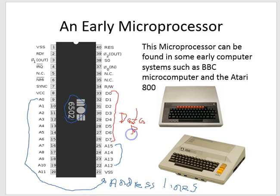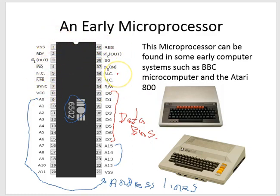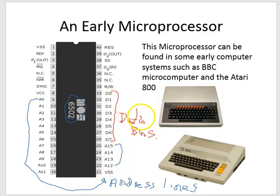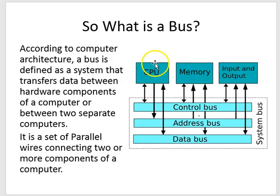The rest of the lines here are control lines and voltage lines which help with the flow of data, but more importantly right now are the address bus and the data bus lines. So, what is a bus?